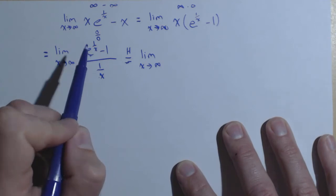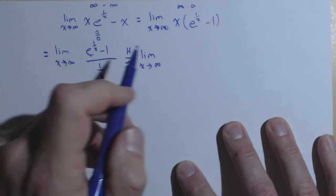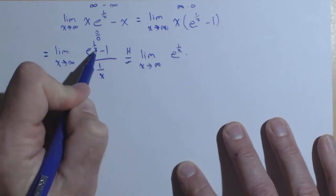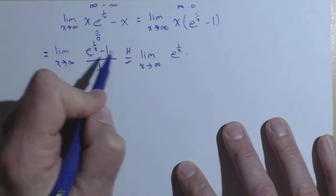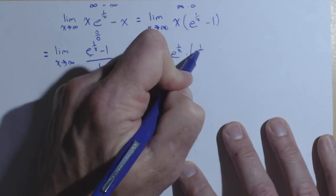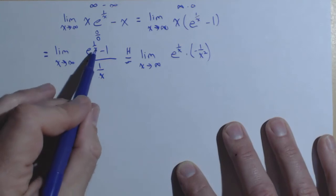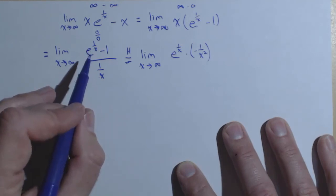This is going to be a chain rule. So derivative of e to the one over x is itself, e to the one over x, times the derivative of the exponent. The derivative of one over x is negative one over x squared. So if you need a refresher on that, remember, one over x gets rewritten as x to the negative one and you apply the power rule.